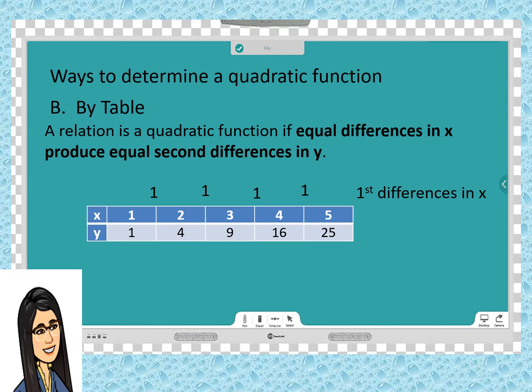Now, let us look at y values. Getting the differences, we have 4 - 1 = 3, 9 - 4 = 5, 16 - 9 = 7, and 25 - 16 = 9. So, these are the first differences in y. Let us continue getting the next differences. 5 - 3 = 2, 7 - 5 = 2, and 9 - 7 = 2.